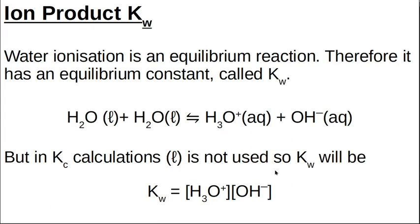This is an equilibrium reaction. The ionization of water is an equilibrium reaction and it's got a Kc, but we call it Kw because it's the equilibrium constant for water — it's an ion product. So if we look at the reaction, water liquid plus water liquid goes to a hydronium ion and a hydroxide ion. Kc is the concentration of products over reactants, but the two reactants are liquid, so we don't include them. Kw is only the concentration of the hydronium ions multiplied by the concentration of the hydroxide ions.